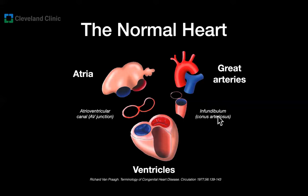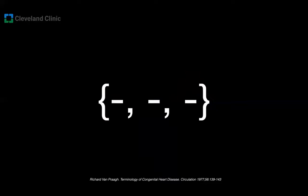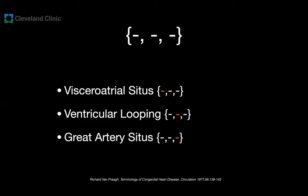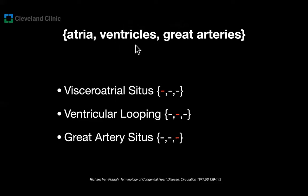The connecting segments will be a whole different lecture. They use braces with three letters inside to describe the visceral atrial situs — that's the first letter — the ventricular looping, the second letter, and the great artery situs for the third letter. In short, atria, ventricles, and great arteries are the three main cardiac segments.